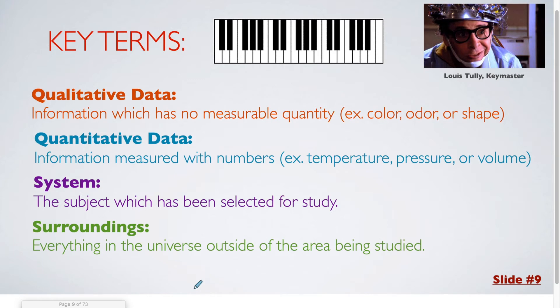The system is the subject which has been selected for study. And the surroundings is everything in the universe which is outside of that system.